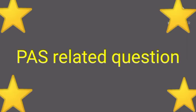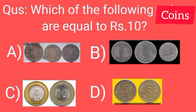Now, it's time for a practice question. The question is: which of the following coins are equal to rupees 10? In option A, we have 3 coins of rupee 1. In option B, we have 1 rupee coin, 2 rupee coin and 5 rupee coin. In option C, we have 2 ten-rupee coins. In option D, we have 2 five-rupee coins.